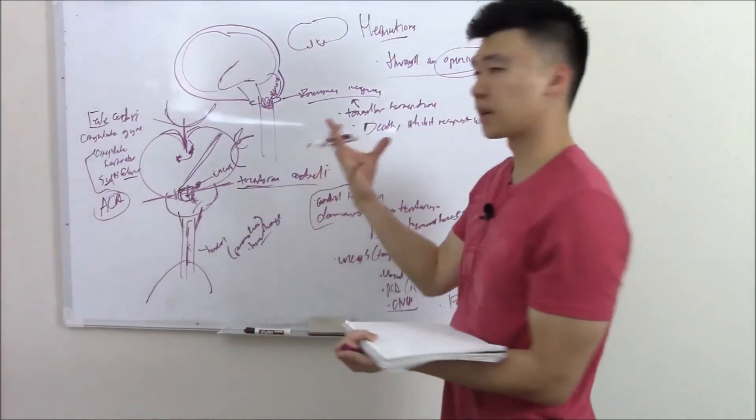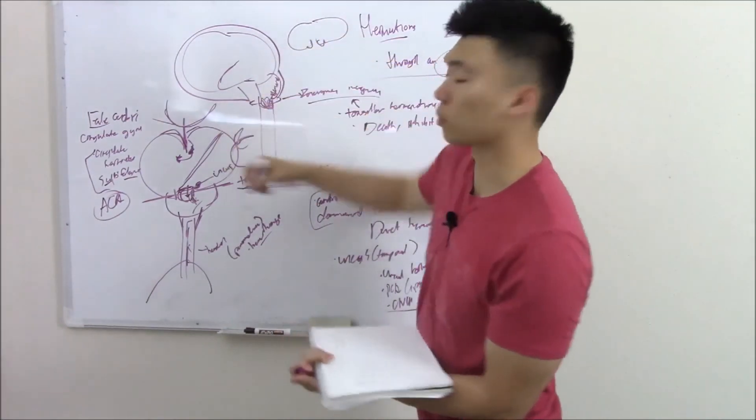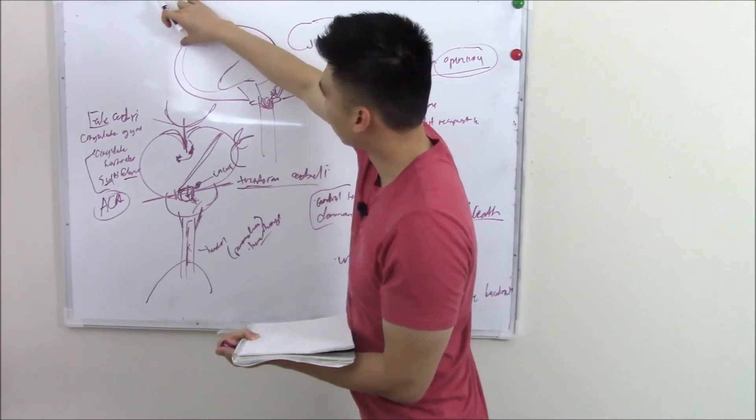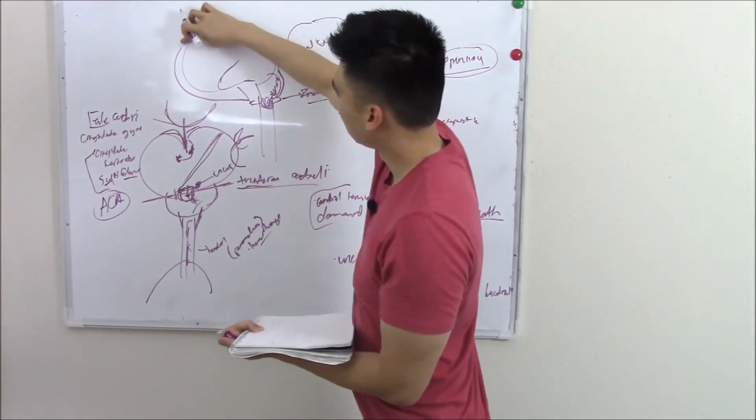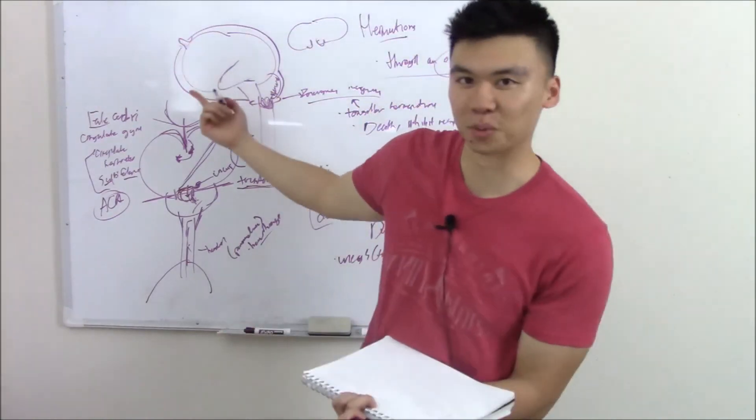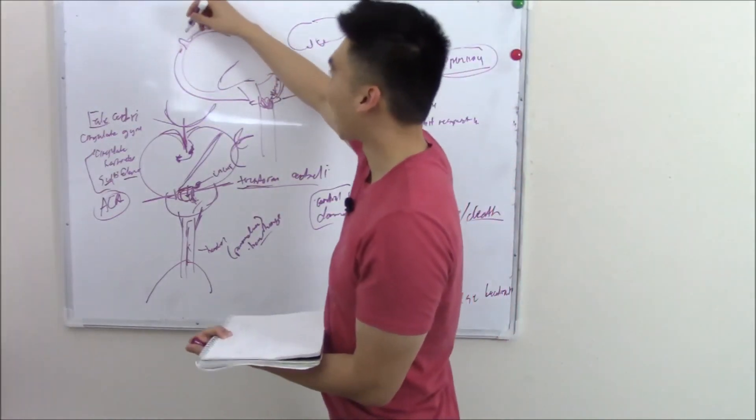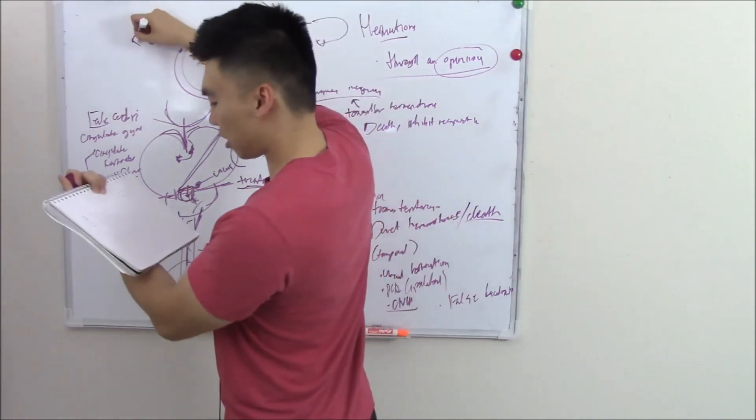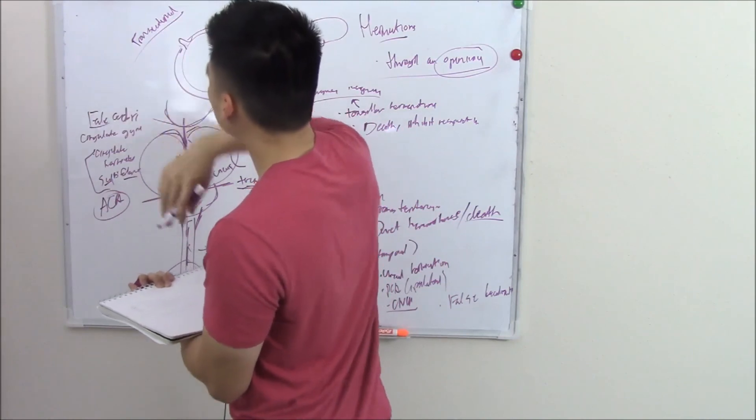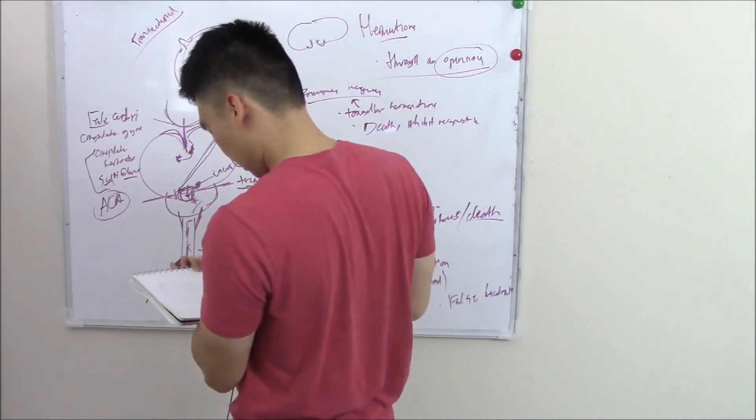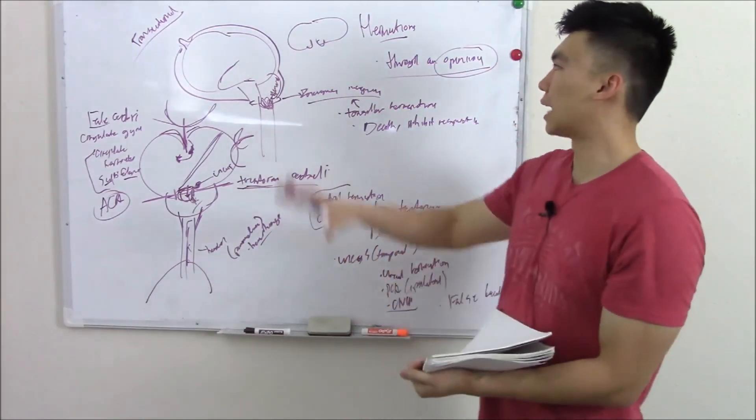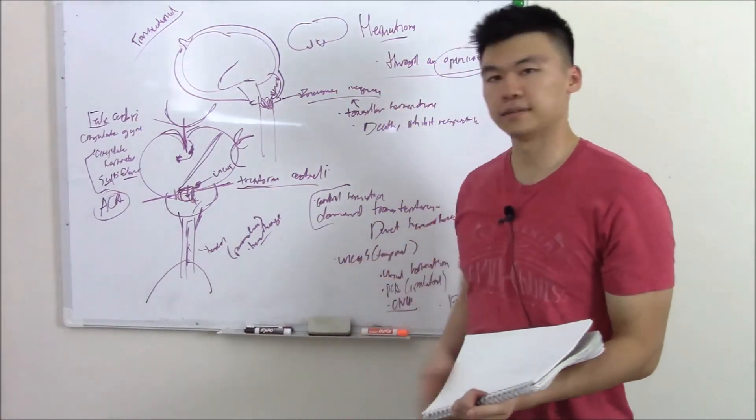The last topic in our herniation talk is not a herniation through these three normal structures. Instead, if you have a fracture in your skull and there's an opening here, your brain can herniate out of that. That's not a normal structure—that's quite abnormal. This is called transcalvarial herniation through a hole or fracture that's not supposed to be there. That's all your herniations. Hope you enjoyed the video.